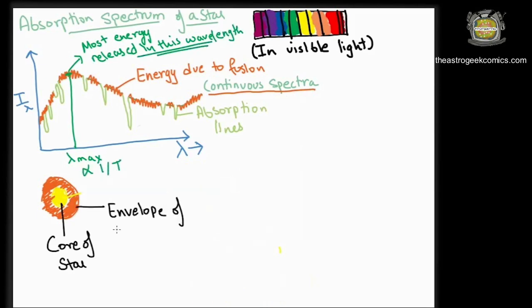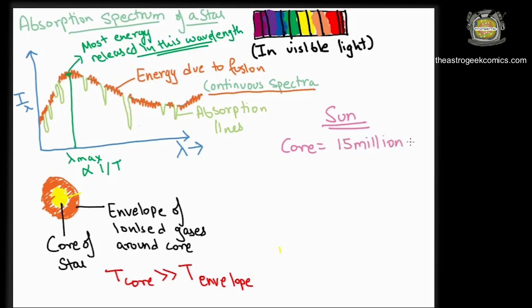This energy peaks around a certain region of the electromagnetic spectrum based on the star's temperature. The core of the star is much hotter than the envelope of the ionized gases surrounding it. These gases are cold compared to it. For an idea, the temperature of the sun's core is 15 million degree celsius while its surface is at 5800 degree celsius.